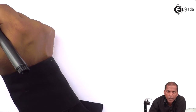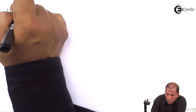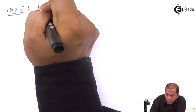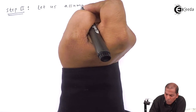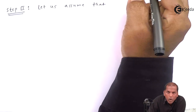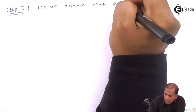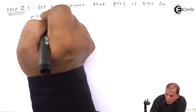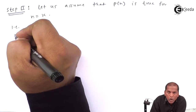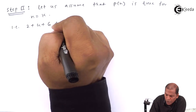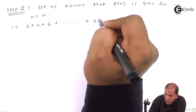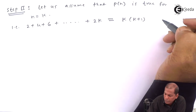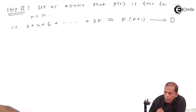Now step number 2: let us assume that P(n) is true for n equal to k. That is, 2 plus 4 plus 6 plus dot dot plus 2k is equal to k(k plus 1). Let us denote this as equation number 1.